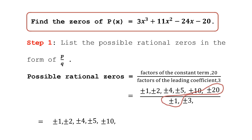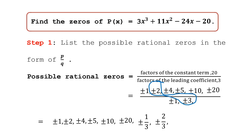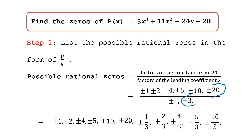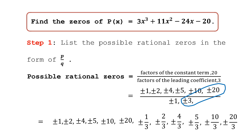Now dividing by the denominator 3 gives us: ±1/3, ±2/3, ±4/3, ±5/3, ±10/3, and ±20/3. Now we have the complete list of simplified possible rational zeros. We proceed to synthetic division and try each possible rational zero to find which ones are actually zeros of our given polynomial function.